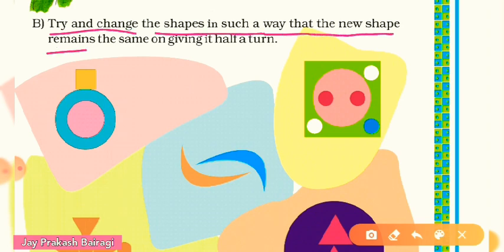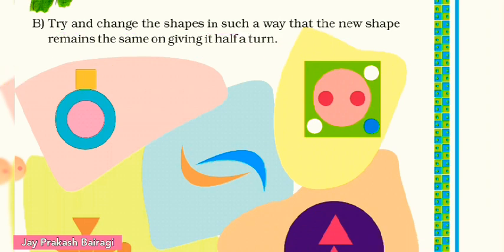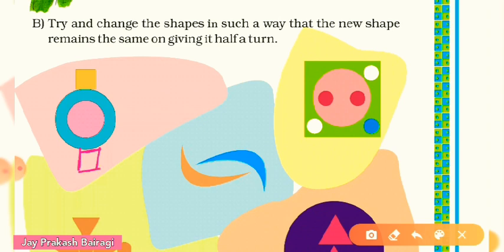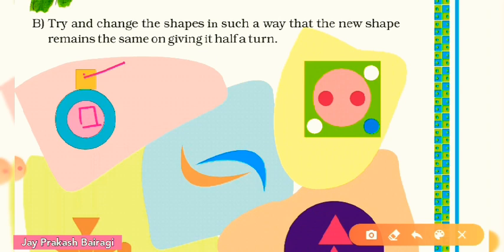Now come to Question B: change the shapes so that the new shape looks the same after half a turn. For the first picture — a circle with a square on top — you can draw another square at the bottom with the same yellow color. Another way is to place the square at the center. In half turn it will definitely look the same.